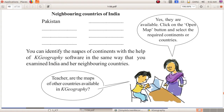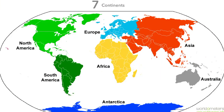You can identify the names of continents with the help of K Geography software in the same way that you examined India and her neighboring countries. The next activity for you is identifying the names of continents. How many continents are there? Asia, Africa, Europe, Australia, Antarctica, North America, and South America — these are the seven continents.